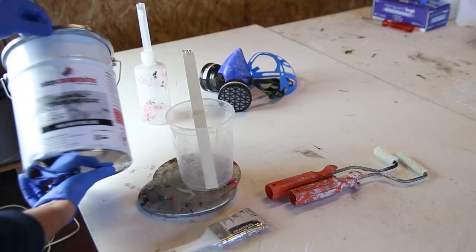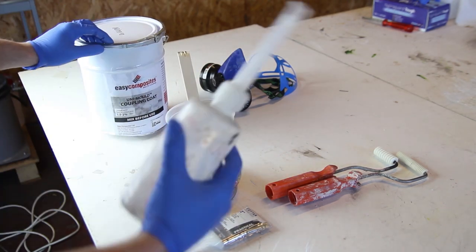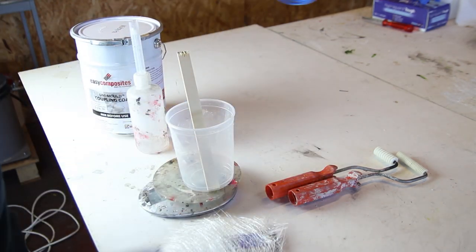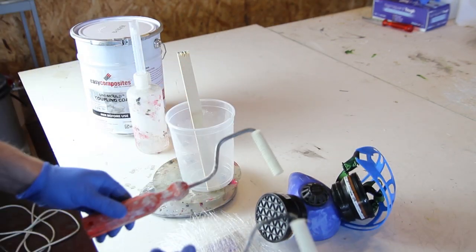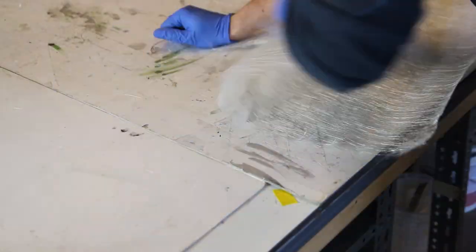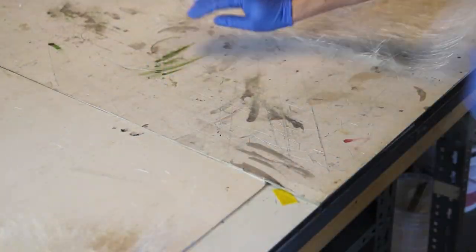So this is the Unimold mold making system, so it consists of three crucial steps. The first one is the Unimold gel coat, then you proceed with the coupling coat that will enable a good bond between the gel coat and the finishing coat that would be the tooling resin.